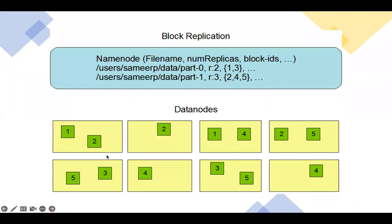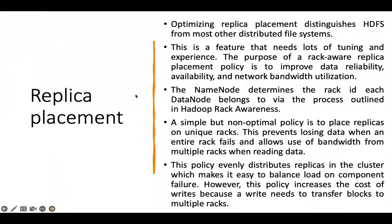Looking at this general configuration diagram, block one is replicated and present on multiple Data Nodes. So if machine one goes down, we can access block one from another Data Node and complete the job. This is what makes the system fault tolerant, and that is why Google, Facebook, and many other companies use this framework — they need continuity of jobs and processes. Replica placement is a very interesting phenomenon.